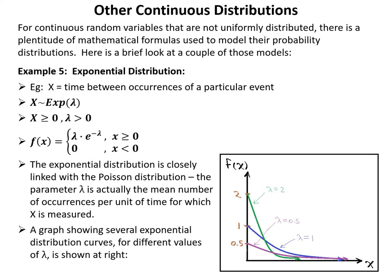The exponential distribution is closely linked with the Poisson distribution. The parameter λ is the mean number of occurrences per unit of time. While a Poisson random variable counts the number of occurrences, the exponential random variable x measures the time between those occurrences.